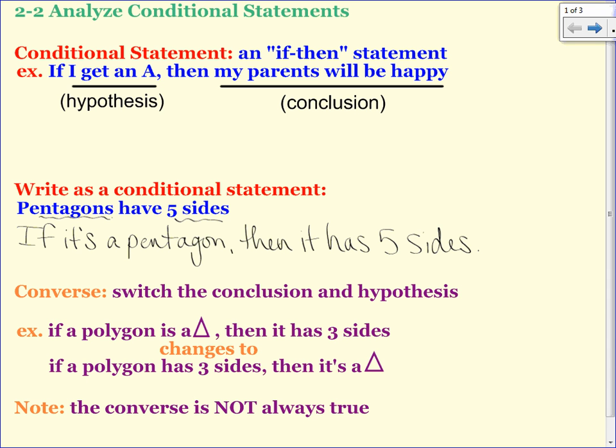For instance, looking at the very top one, if I get an A, if you wrote the converse, if my parents are happy, then I get an A. Is that true? Do your parents being happy make you get an A in a class? No. So that's the logic piece of it, the math portion of it, where it's using your brain to figure out, is this sentence a true one or a false one? Would it work in all cases?